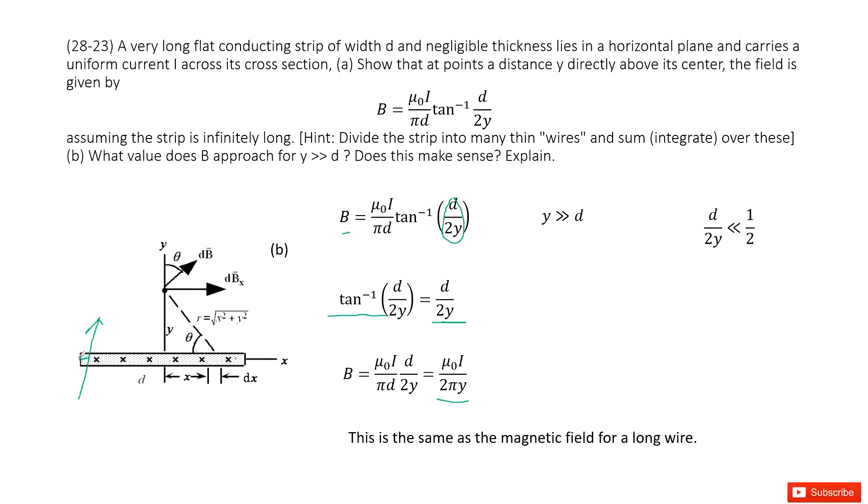2πy is the distance from the point to the wire. So in this case, we can consider this strip as a wire. We don't consider its shape. Thank you.